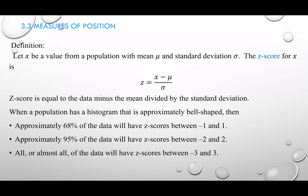If you have a positive z-score, it tells you that you are above the mean — how many steps above the mean. For instance, if you have a positive 1.5 z-score, you are 1.5 standard deviations above the mean. It's not the actual unit; the z-score tells how far you are from the mean. A negative z-score tells you that you are below the mean. Later on in chapter 6, the z-score is called the standard normal, which is the same for every bell-shaped or normal distribution curve.